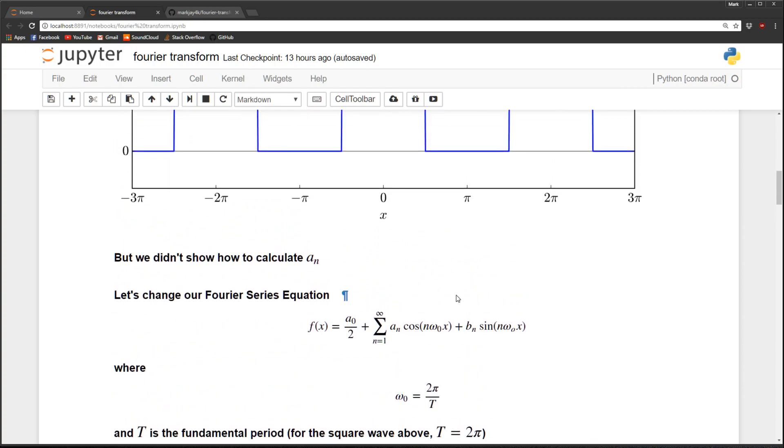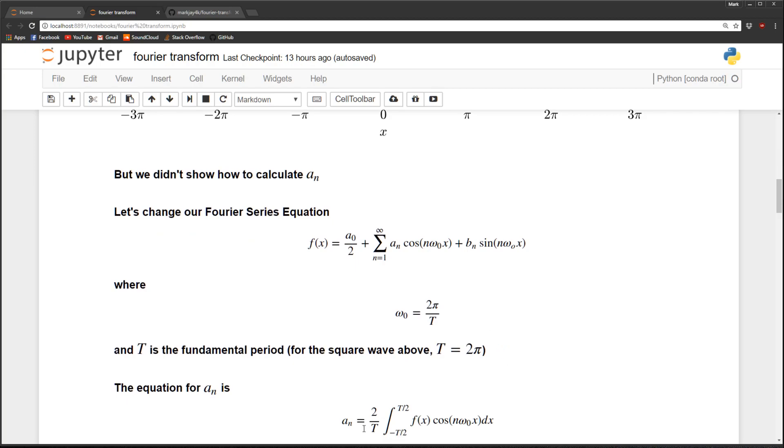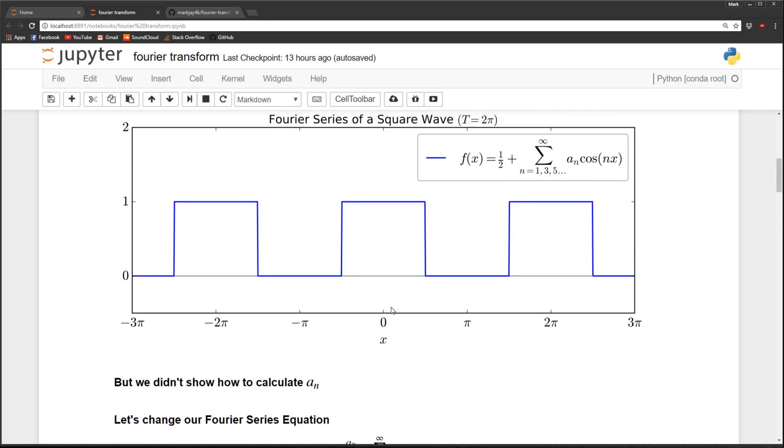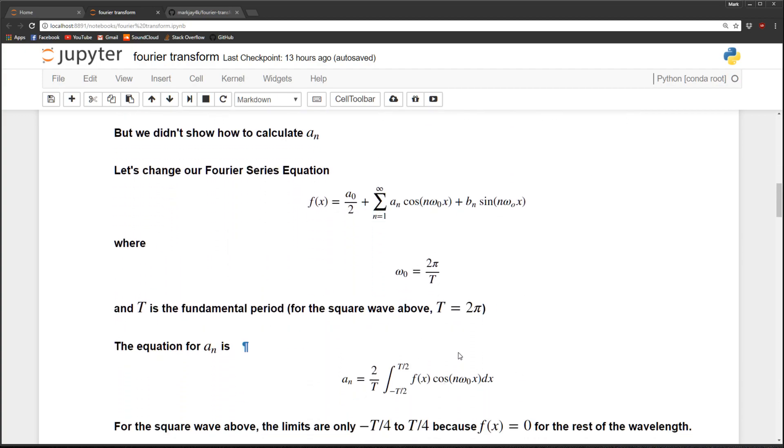So if we want to calculate a_n, the equation is this integral right here. It's two divided by T, which is the period, and then we integrate over one period. And the integral is f of x times cosine n omega naught x dx. This integral actually isn't too bad because if we go back to our function f of x, we can see that over those integration limits the function is zero for a chunk of it. So we can shorten our limits to just from here to here, and over that interval the function is just one.